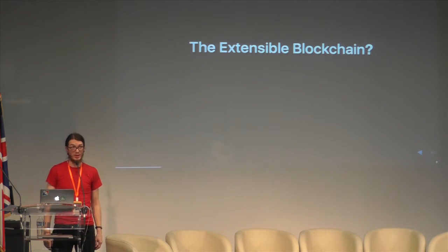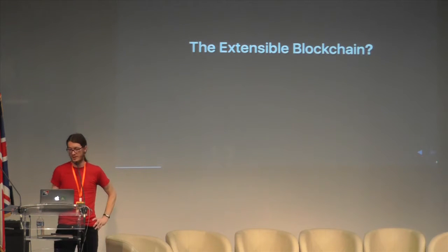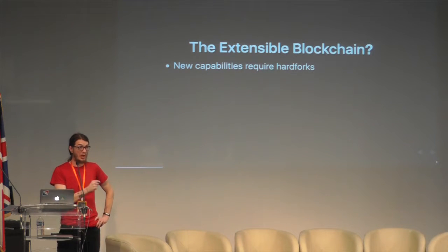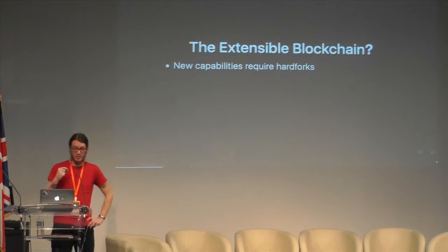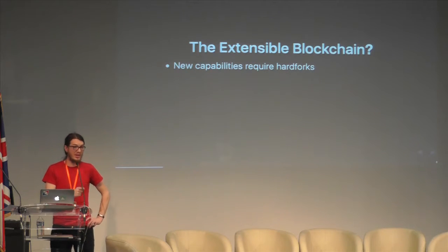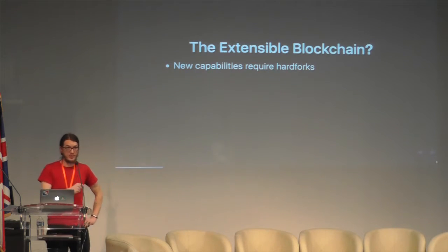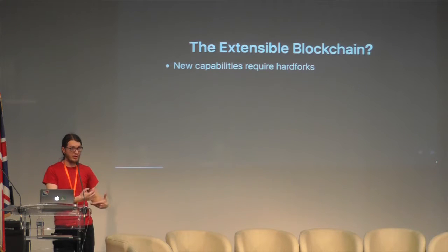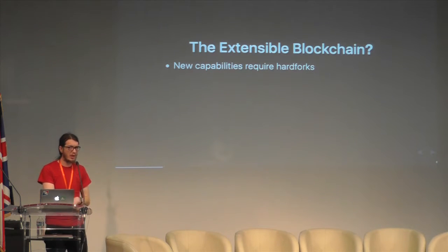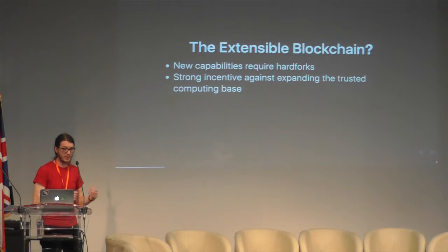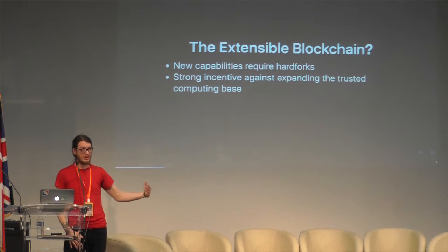Can we build an extensible blockchain along the same lines as the Extensible Web Manifesto? I think it's almost even more important to have an extensible blockchain than an extensible web, and that's because new capabilities require hard forks. And this is really hard to come to consensus on at a social level. Browsers don't have to worry about this — one browser can implement whatever set of features it wants, and that's fine. But it doesn't quite work that way in blockchains — all the clients have to have the exact same set of features to operate correctly. There is a very strong incentive against expanding the trusted computing base.